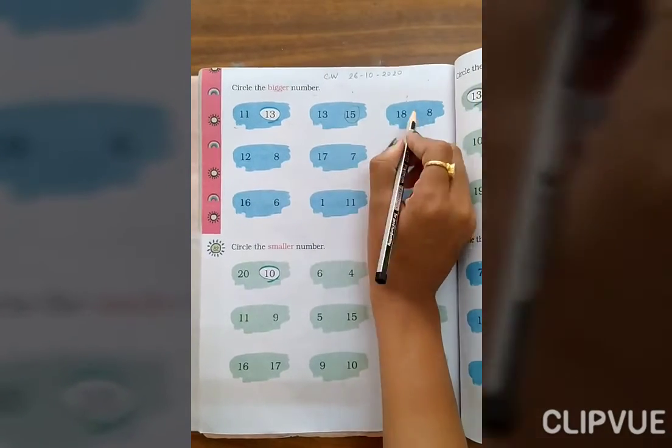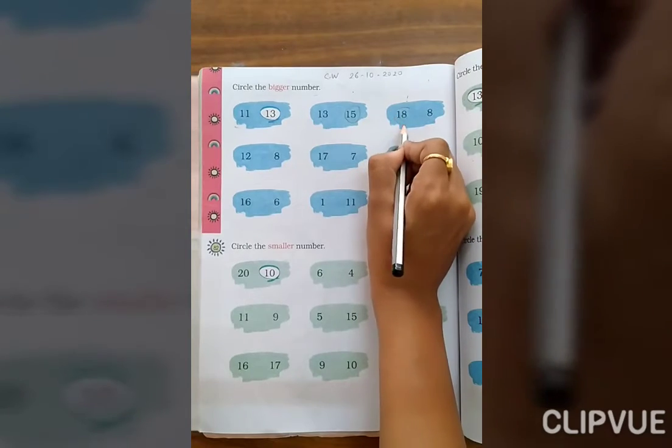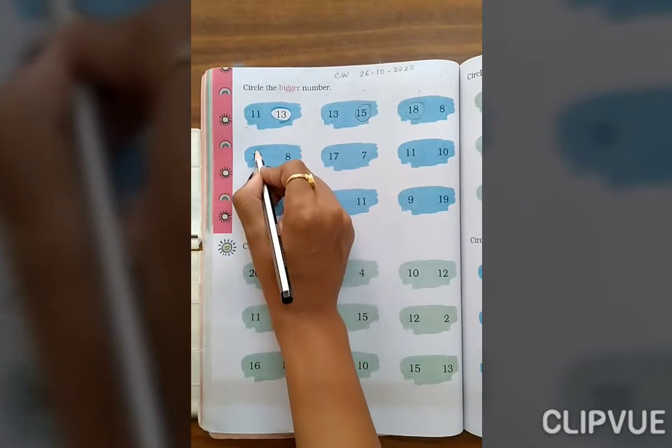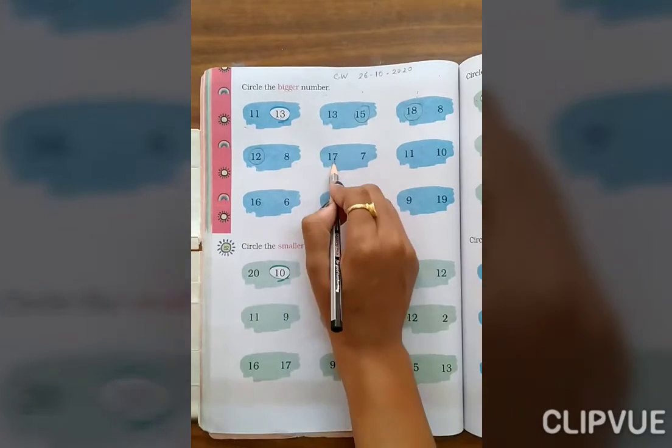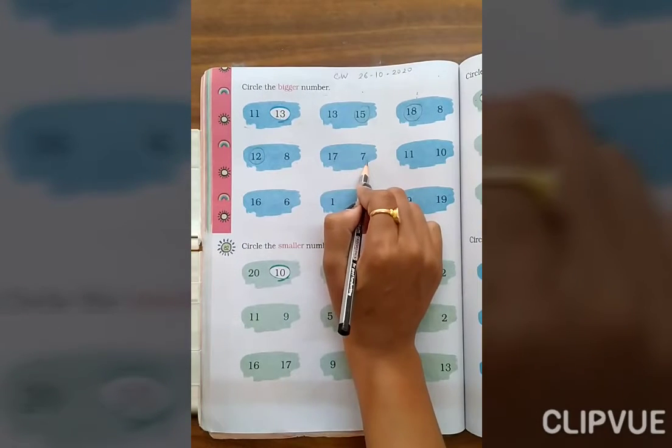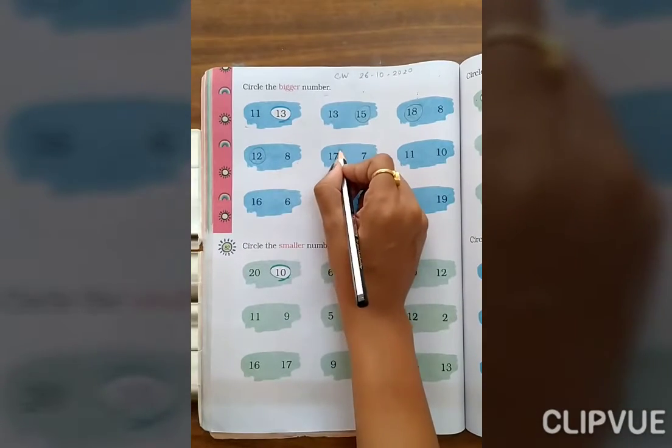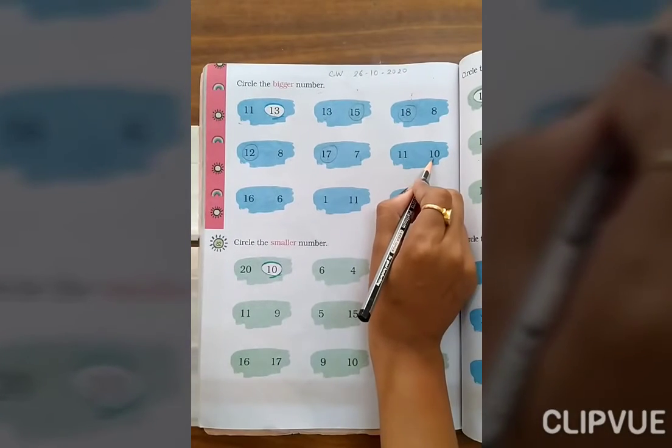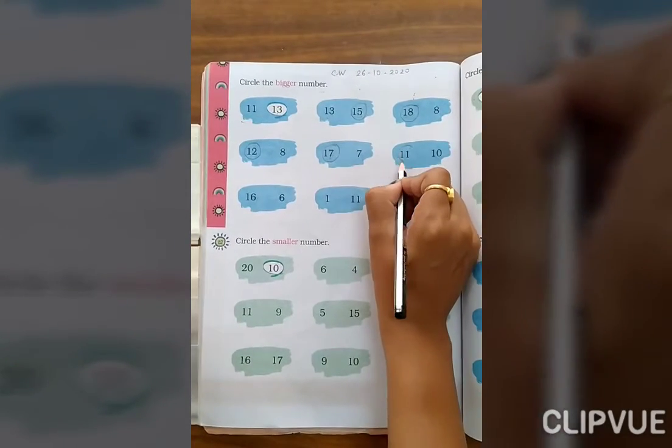18, 8. 18 bigger. 12, 8. 12 bigger. 17, 7. Which one is bigger? 17. 11, 10. Which one is the bigger number? 11.